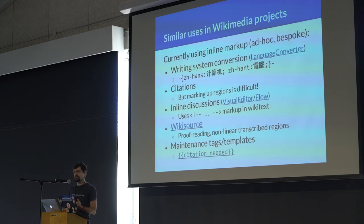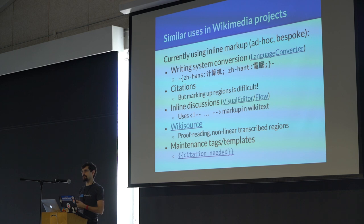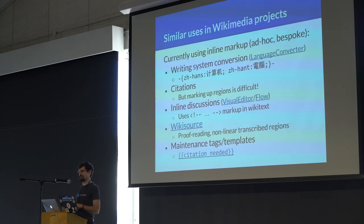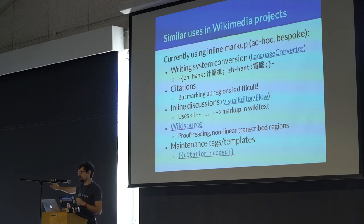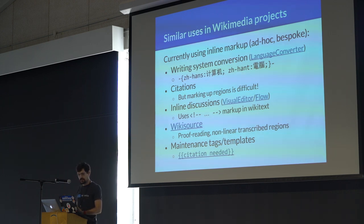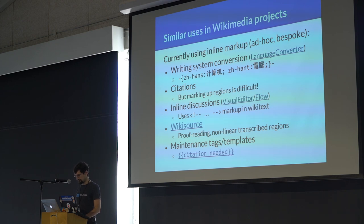We support conversations between editors currently using invisible markup with the HTML comment syntax — which isn't great, but it's very necessary. It's usually used to explain, for example, why in this article 'color' is spelled consistently with a U — please don't change it. Those comments are really important but they're not part of the reader's view; they're part of the editor's view. The Wikisource project transcribes scanned PDFs and uses its own ad hoc system for maintaining correspondence between the transcribed region and the part of the PDF it's a transcription for. A lot of the social processes we use to maintain the encyclopedia use tags or templates in the wiki text, like the famous citation-needed template — those can also be considered a form of annotation on top of the base content.